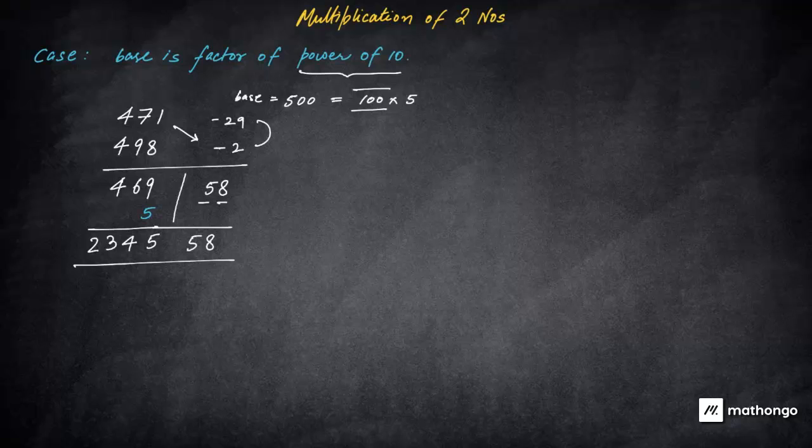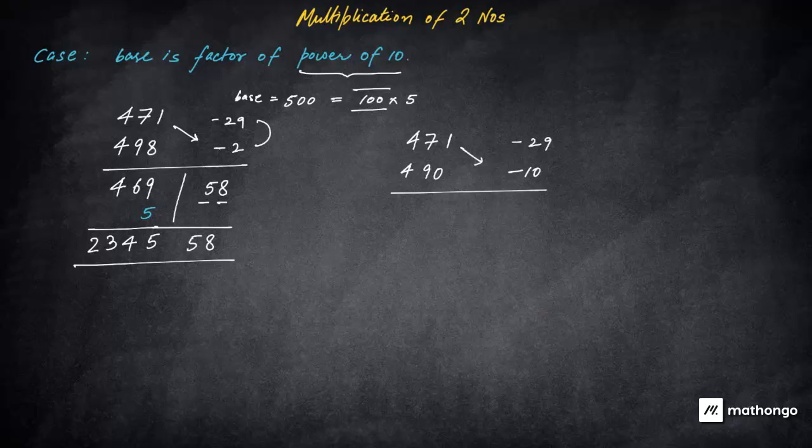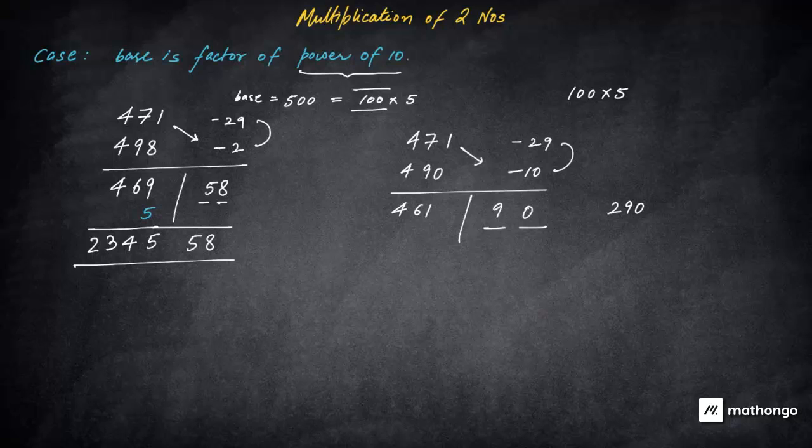So let's just build on this example. If we were to ask you 471, let's say 490. Let's say both numbers are again deficit. This is minus 29, this is minus 10. Now why I've taken this question, you would definitely understand. So you will cross add here. So this will be 461. Then you will multiply these two. So now the multiplication will lead to what value? This will lead to 290. Whereas the base is two decimal. The base is 100 into five. That means you can just have two digits here. So put this here. Two is a carryover. Remember, two is a carryover.